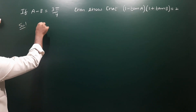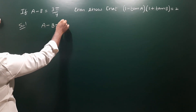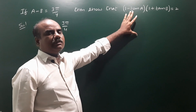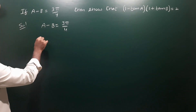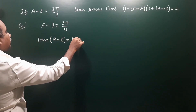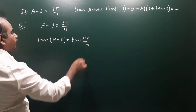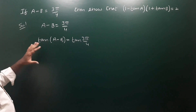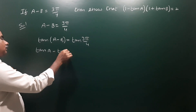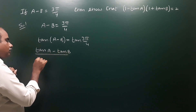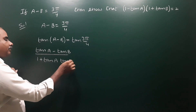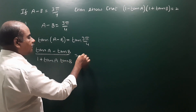Since A minus B equals 3π/4, apply tan on both sides: tan(A minus B) equals tan(3π/4). Using the tan subtraction formula: tan A minus tan B, divided by 1 plus tan A tan B, equals tan 135°.